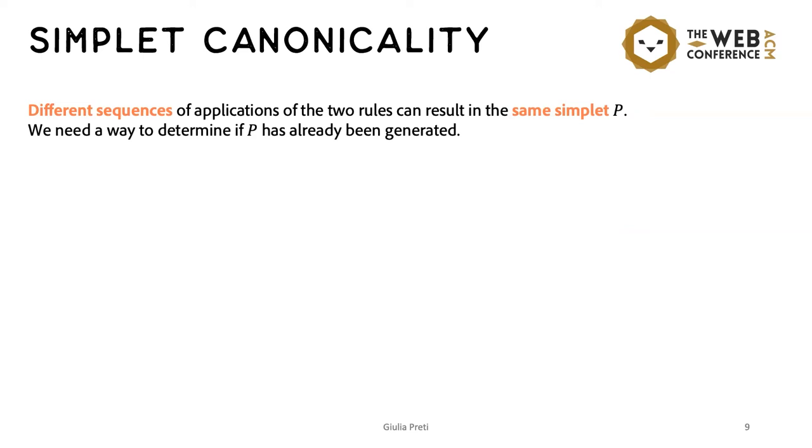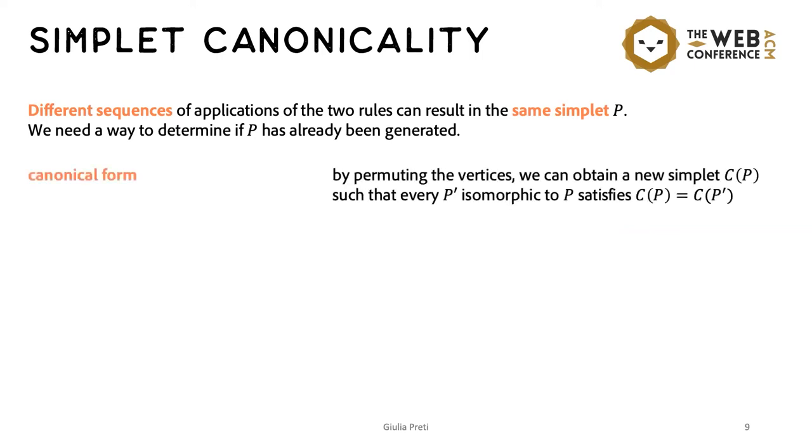And to determine whether a simplet has already been generated, we need to compare it with the simplets generated previously. And these comparisons are actually isomorphism tests. So, to simplify this task and avoid repeatedly computing isomorphism tests, we just find the canonical forms of the simplets and compare them in place of the simplets. The canonical form of a simplet has the property that isomorphic simplets have the same canonical form and the two canonical forms can be compared in constant time.